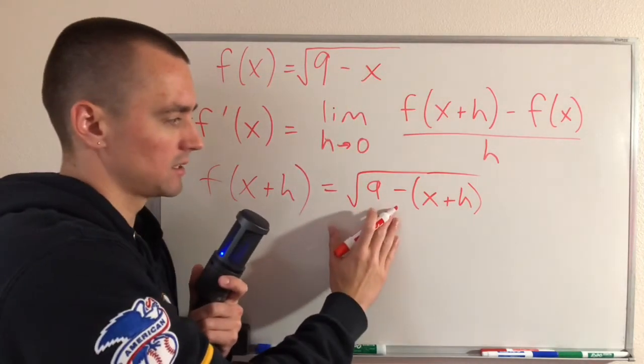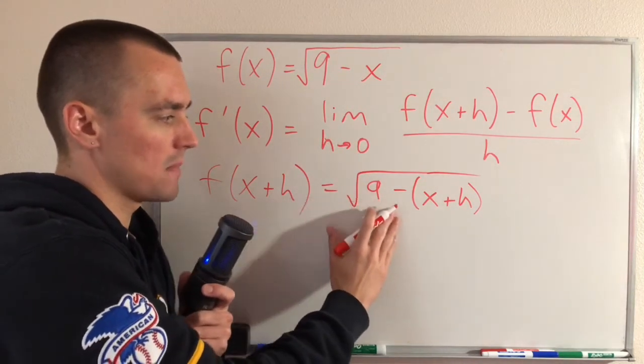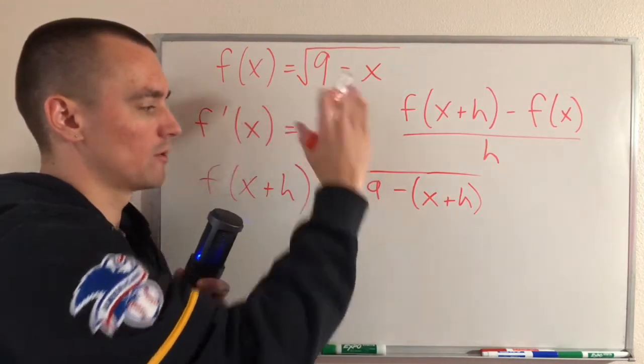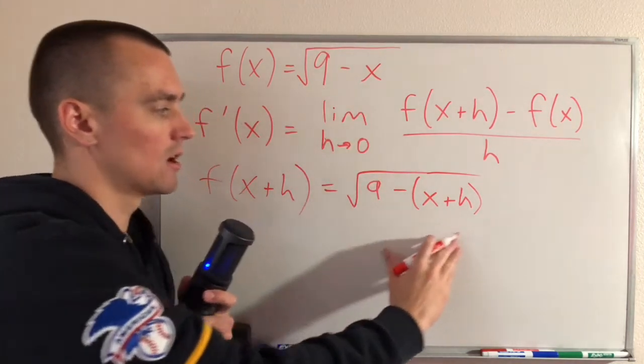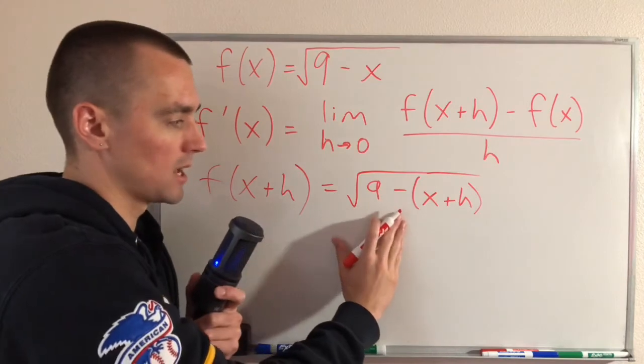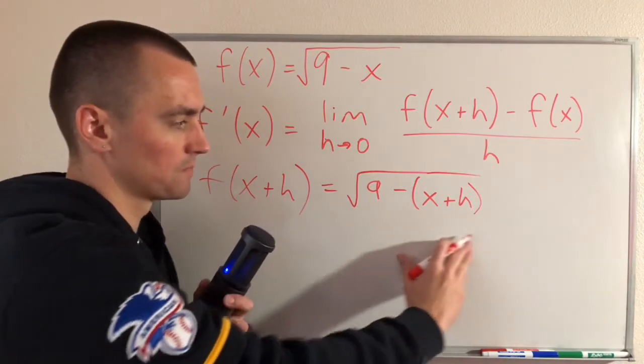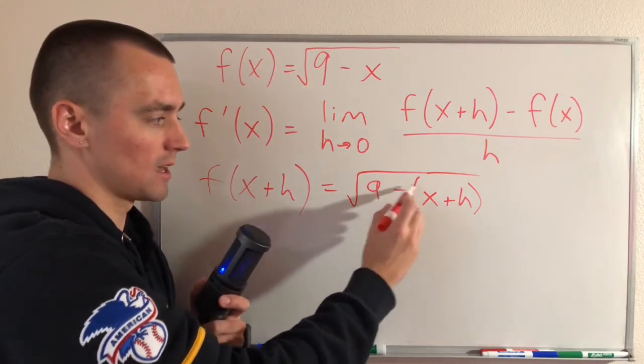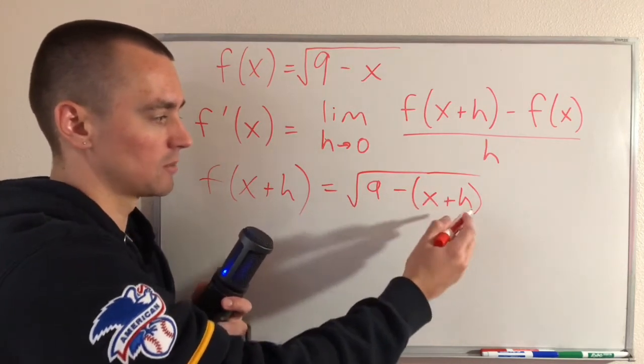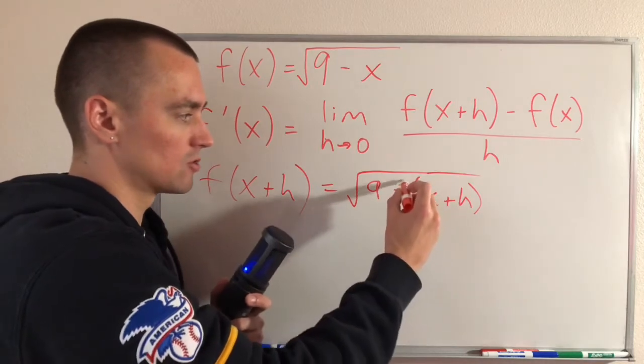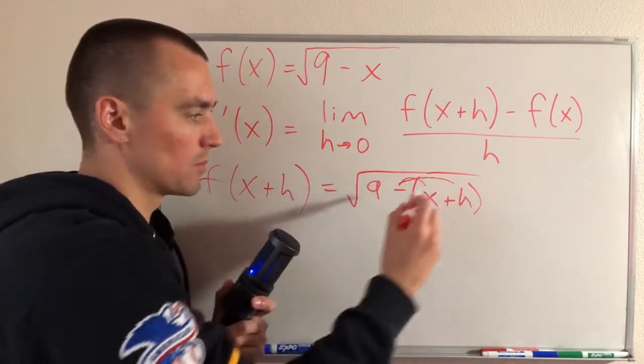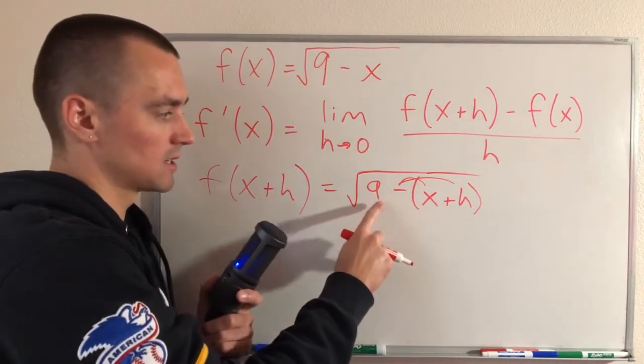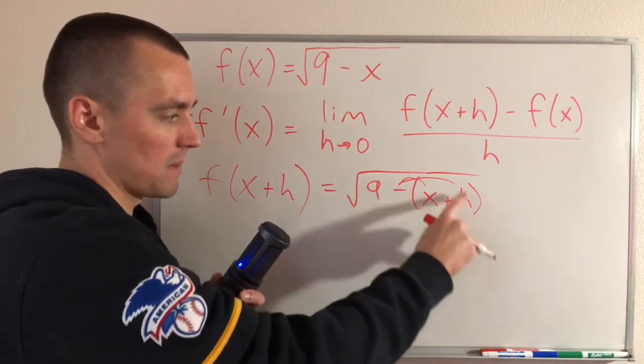But in this case, you can see we have 9 minus x. So as a result, when we replace the x plus h in there, we need to do 9 minus the entire x plus h. If we don't put these parentheses in here, we're only going to apply this subtraction to the x, and then we're going to have a plus h. But really what we need to do is distribute this negative sign to both the x and the h.